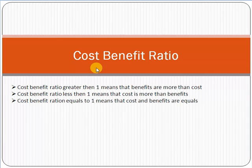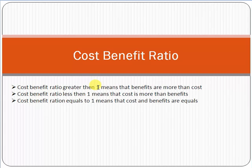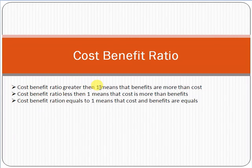Now for the mathematical calculation: the cost-benefit ratio. If your cost-benefit ratio is greater than one, that means the benefits are more than the cost. If the ratio is less than one, the cost is more than the benefits. If the ratio equals one, the cost and benefits from the project are equal.